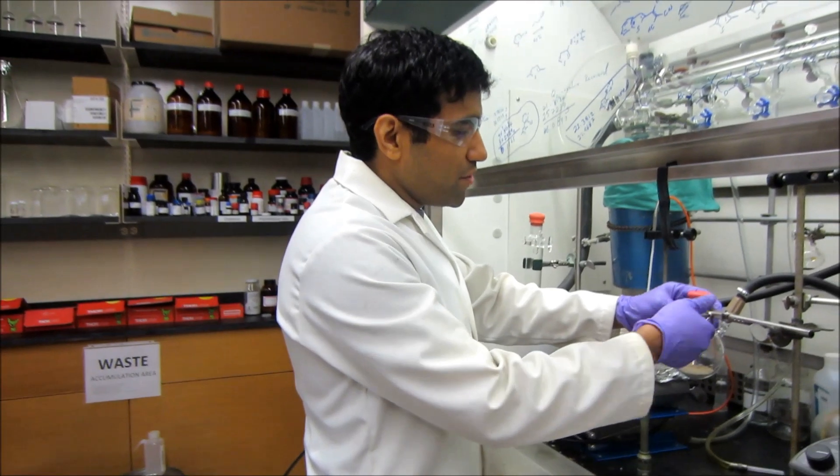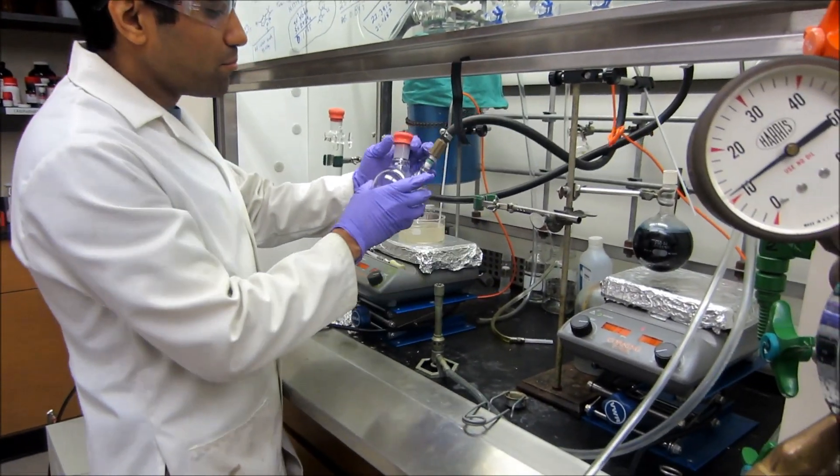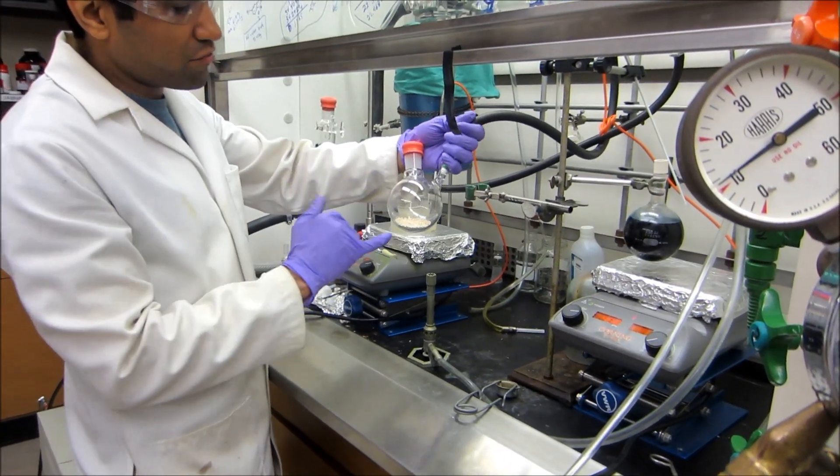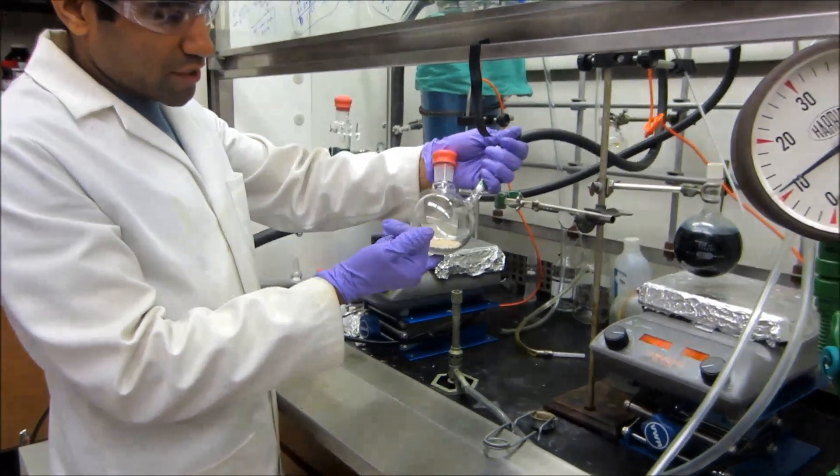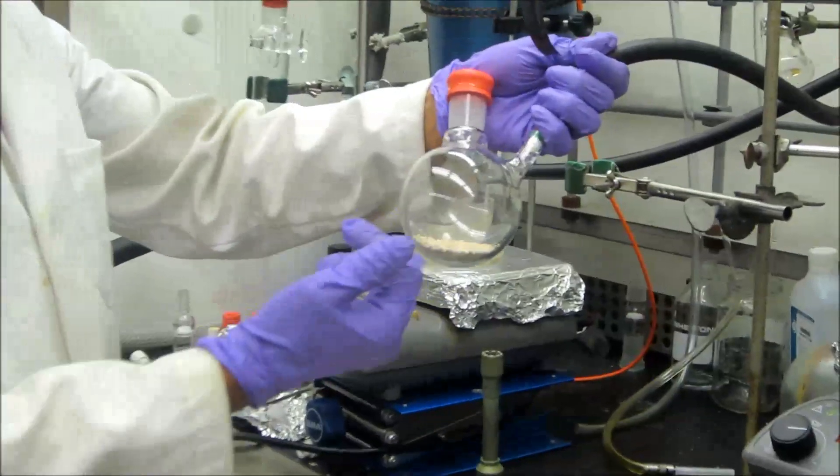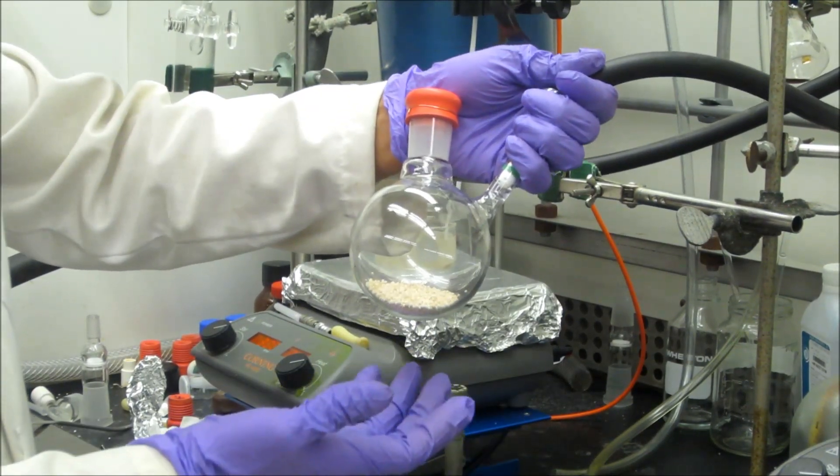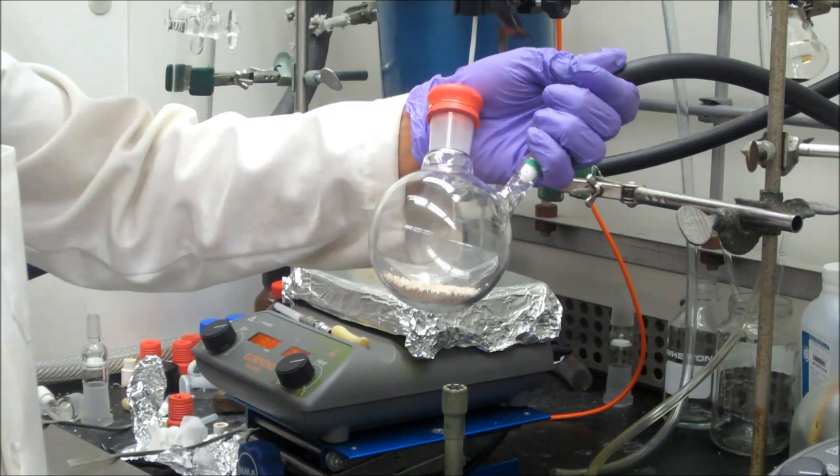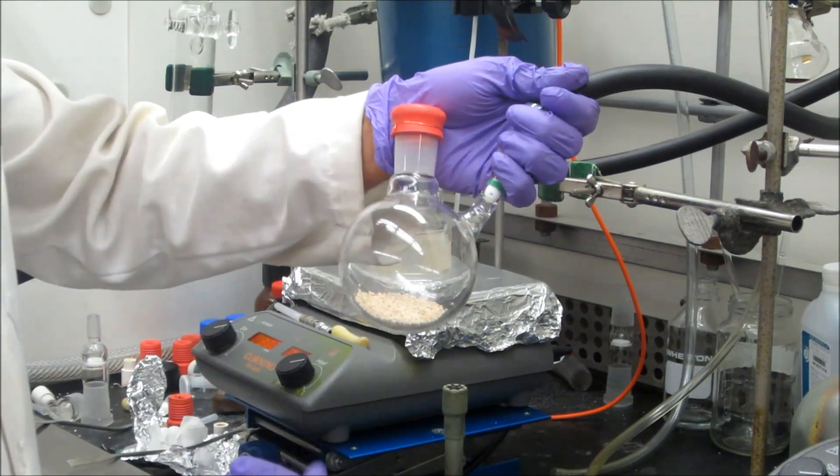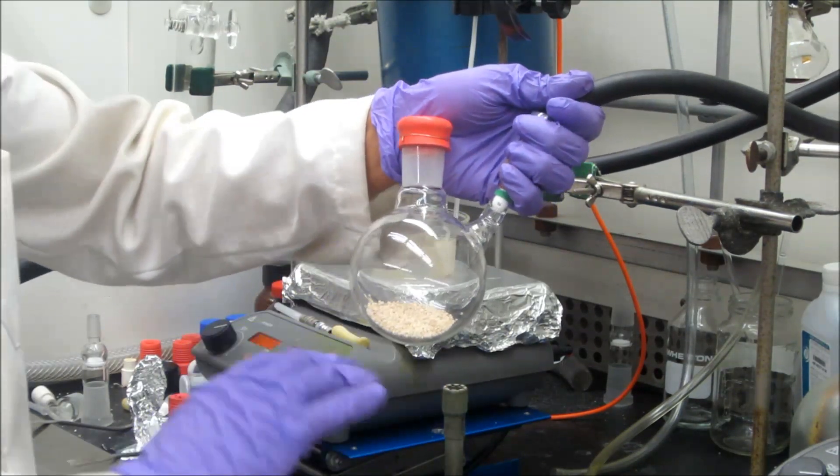So to dry the sieves, you really need to start with an airtight setup. You start with a schlenk flask that has some molecular sieves. These can be sieves that have come from the oven or sieves that have just been sitting around in a jar somewhere. The entire purpose of this exercise is to ensure that these are really bone dry.